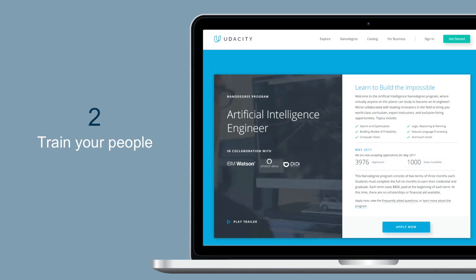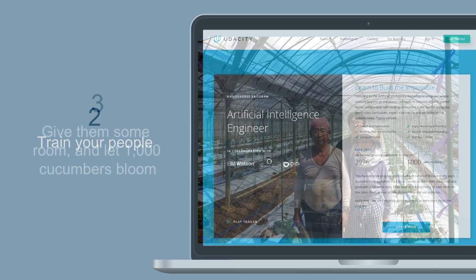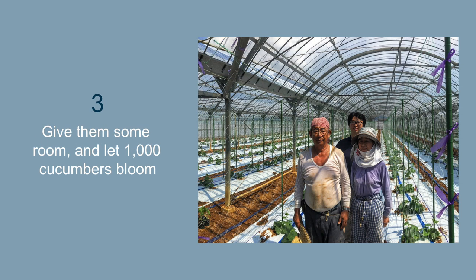Second, train your people. The tools are getting better, but it's people who will use them to write applications. There are great MOOCs and online tutorials — your job as a leader is to make sure people in your organization are trained on what's possible. Finally, let a thousand cucumbers bloom: give your people room to be creative. The cucumber sorter cost less than a thousand dollars. Give yourself the creativity and room to figure out where AI can really move the needle for your company.